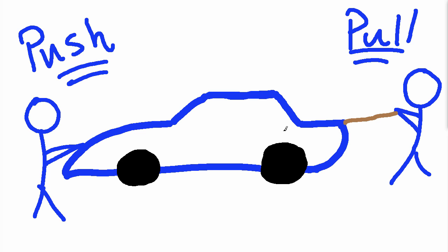Now I'm going to talk about a force that's really important for astronomy — one that doesn't involve being in contact with an object, but still involves two objects for the force to exist. That force is the force of gravity.